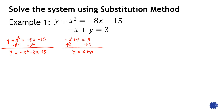Step two: we will combine the two equations using substitution. I'll write the linear expression on the right side — that's x plus 3 — and replace the y of that linear equation with the quadratic expression. So on the left side I will have negative x-squared minus 8x minus 15, because both expressions equal y, so we can set them equal to each other.